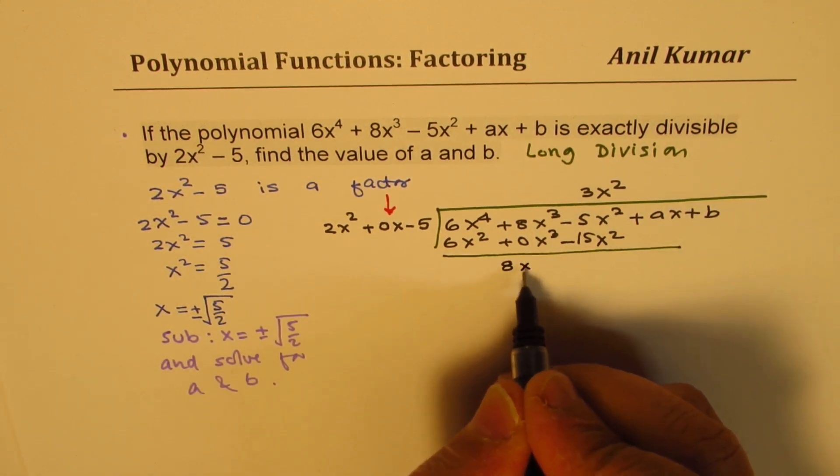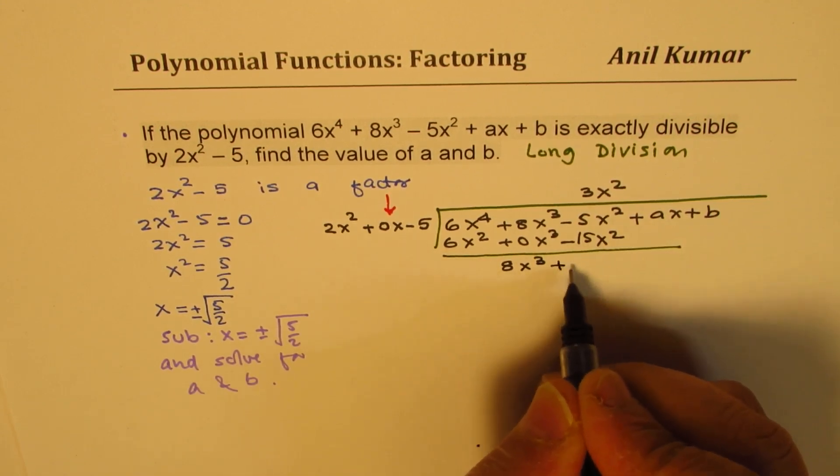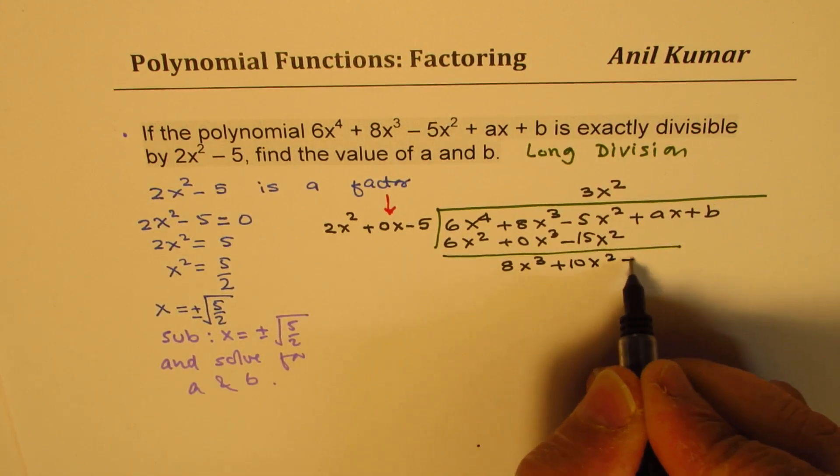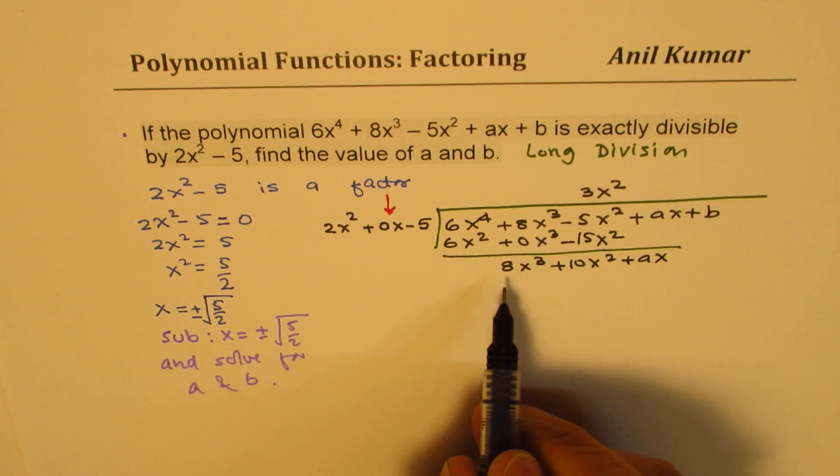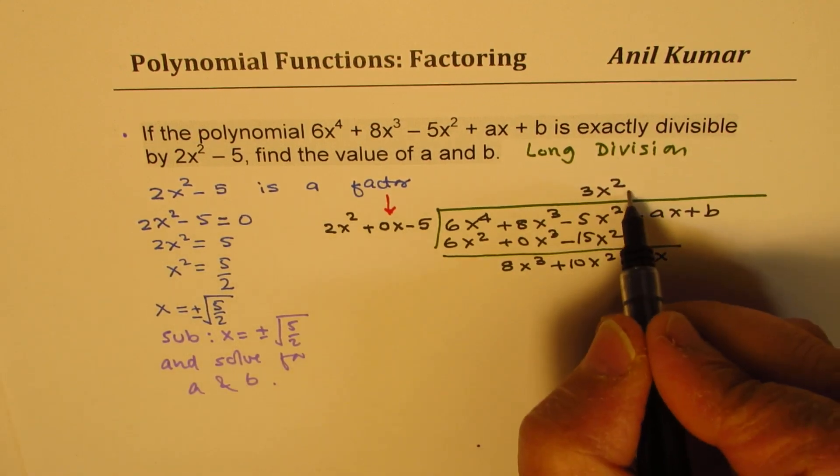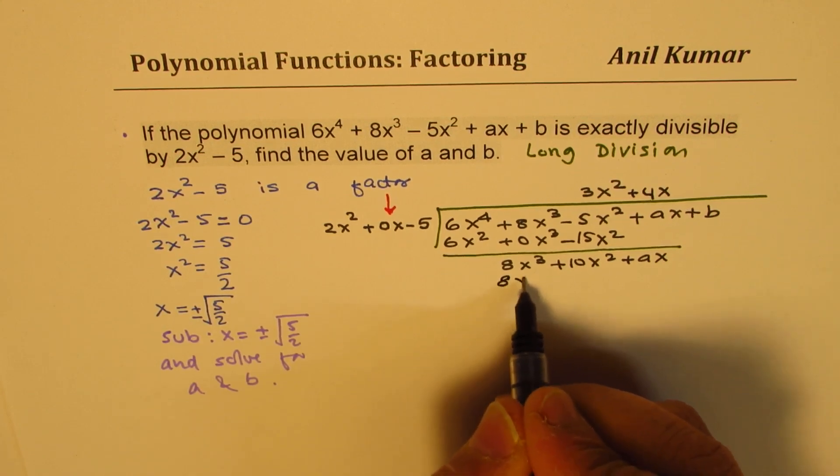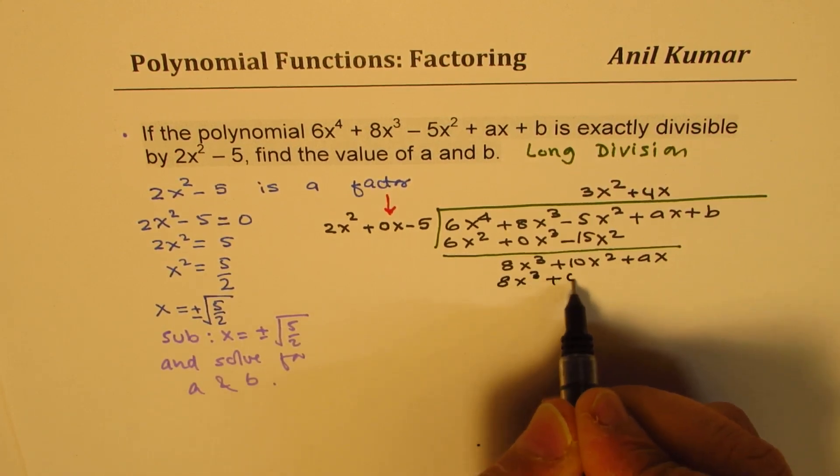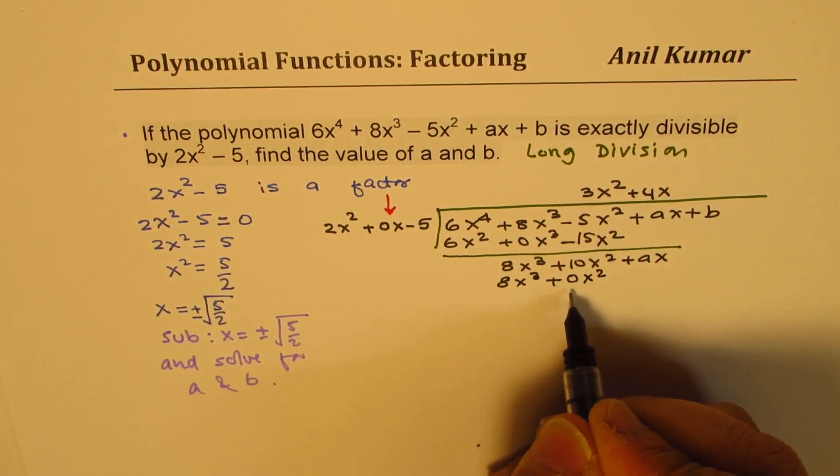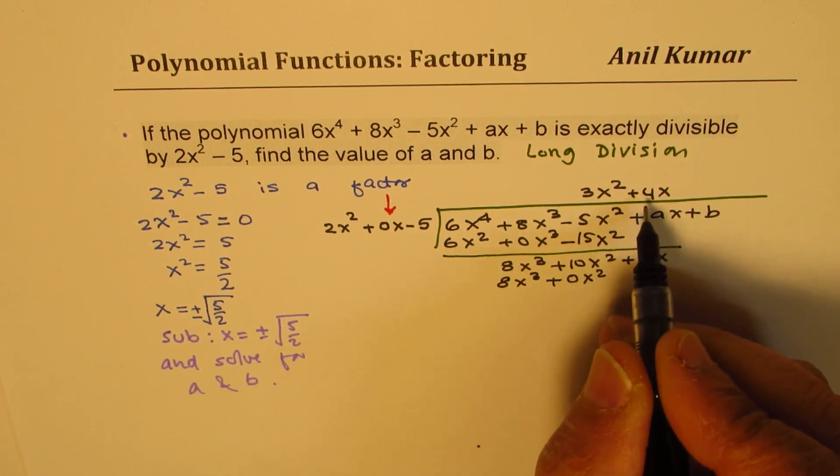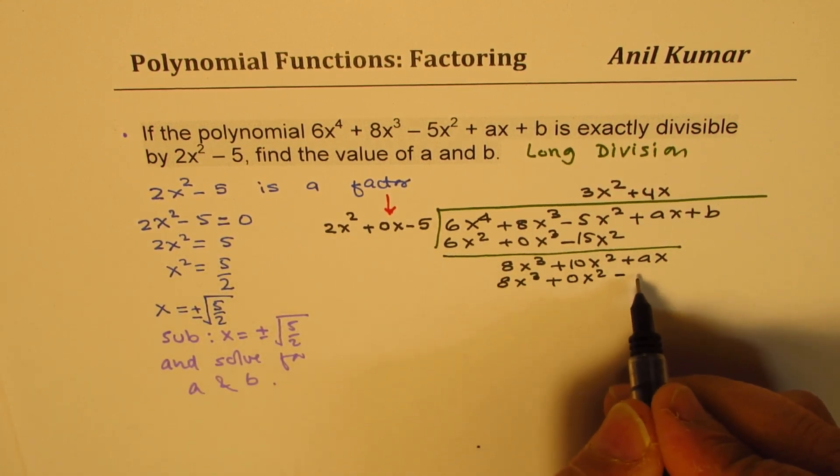Here we get 8x cubed and plus 10x squared plus ax and 8x cubed means by 4x. So multiplying by 4, we get 8x cubed plus 0x squared. So this is a placeholder. It doesn't really change. 4 times minus 5 would be minus 20x.